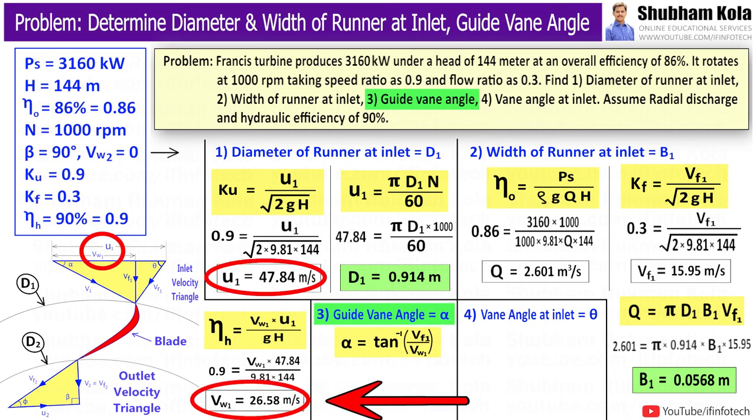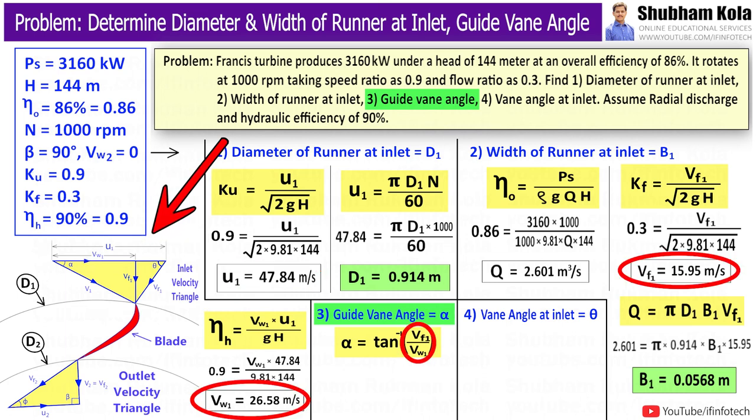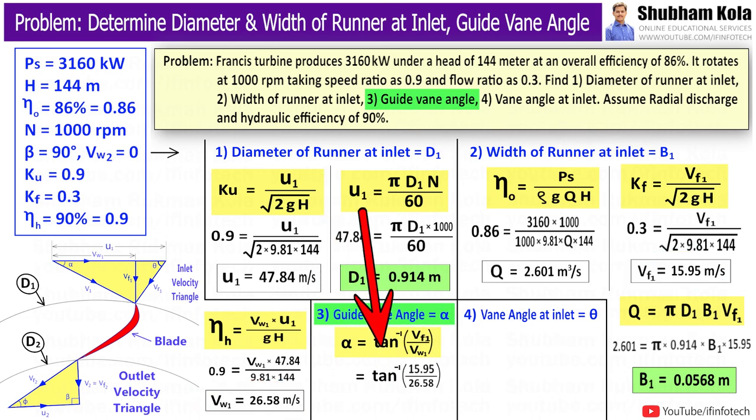Here, since Vw1 is less than U1, our modified inlet velocity diagram will be like this. So, now we have found the values of Vw1 and Vf1 in order to calculate angle α. Therefore, by taking tan inverse, we will get angle α = 30.97°.